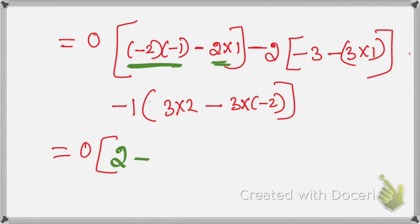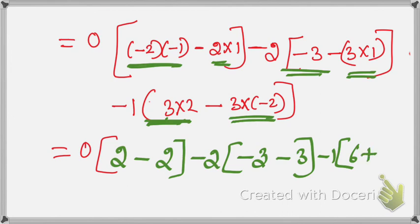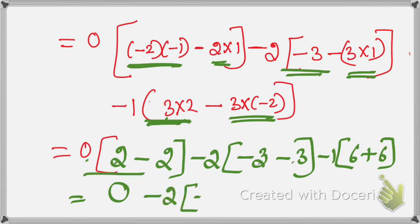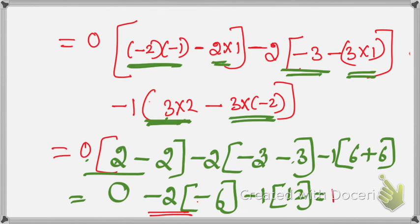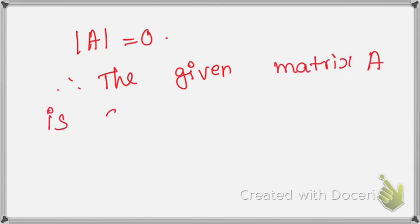Minus 2 cross 1 is 2. Minus 2 into this gives minus 3, so minus 3 cross 1 is 3. Minus 1 into 3 cross 2 is 6. Minus into minus is plus, 3 cross 2 is 6. First, 0 into any number is 0. Minus 2 into minus 3 minus 3 minus 6 is 6. Minus 1 into 6 plus 6 is 12. Minus 12. So the answer is 0. Therefore, mod A equals 0, which means the given matrix A is singular. Definition finished.